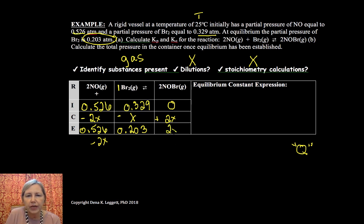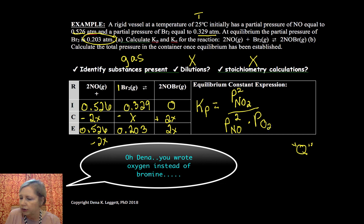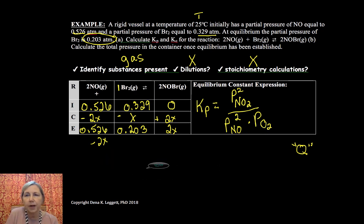And then this would be 2X. So my equilibrium constant in terms of partial pressures. Don't use brackets if it's partial pressures. Is the partial pressure of NO2 squared over NO squared times O2. So that's the information I have. You want to fill in as much of this grid as possible with the information you're given.